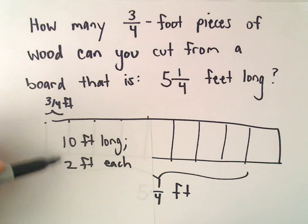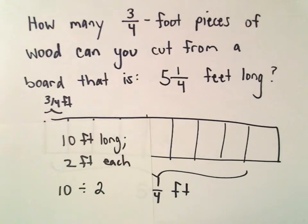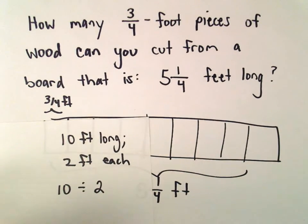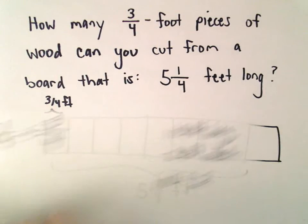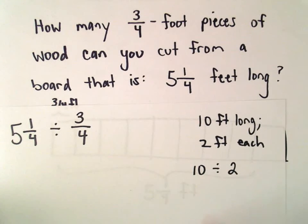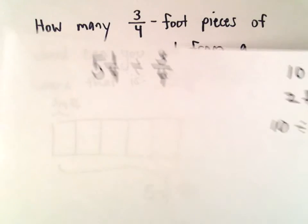And how do you get that? You take the total length and you divide it by the length of each smaller piece. So sometimes I think about these problems with easier numbers just to sort of make sure that I'm doing the right thing. In this case, division. So division makes sense.